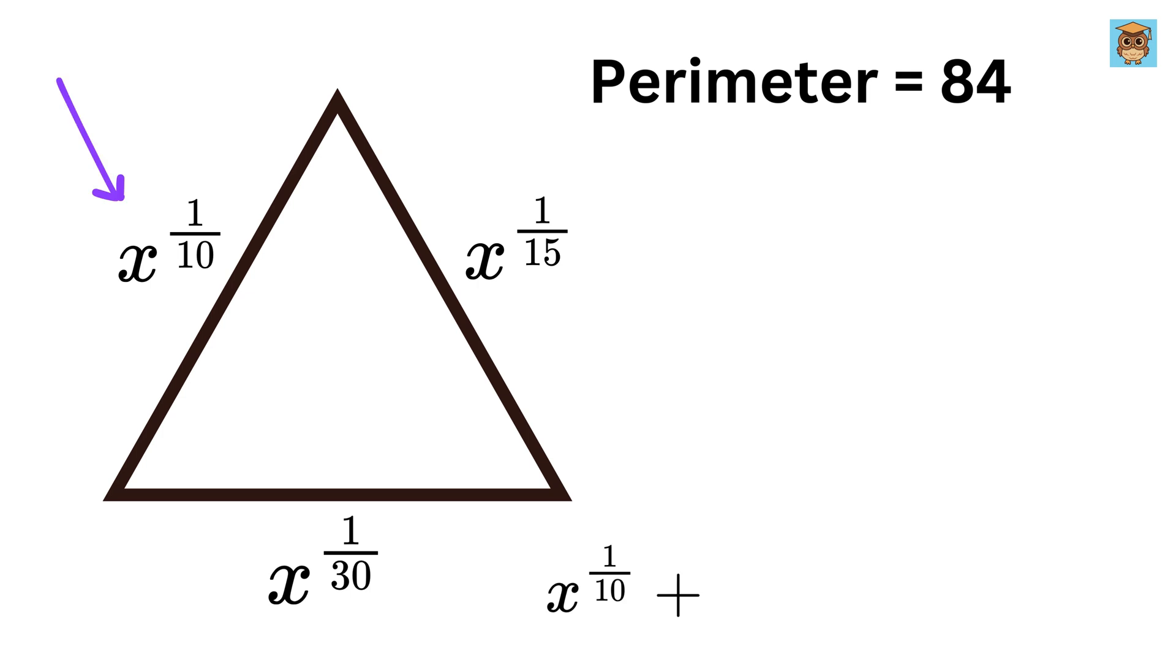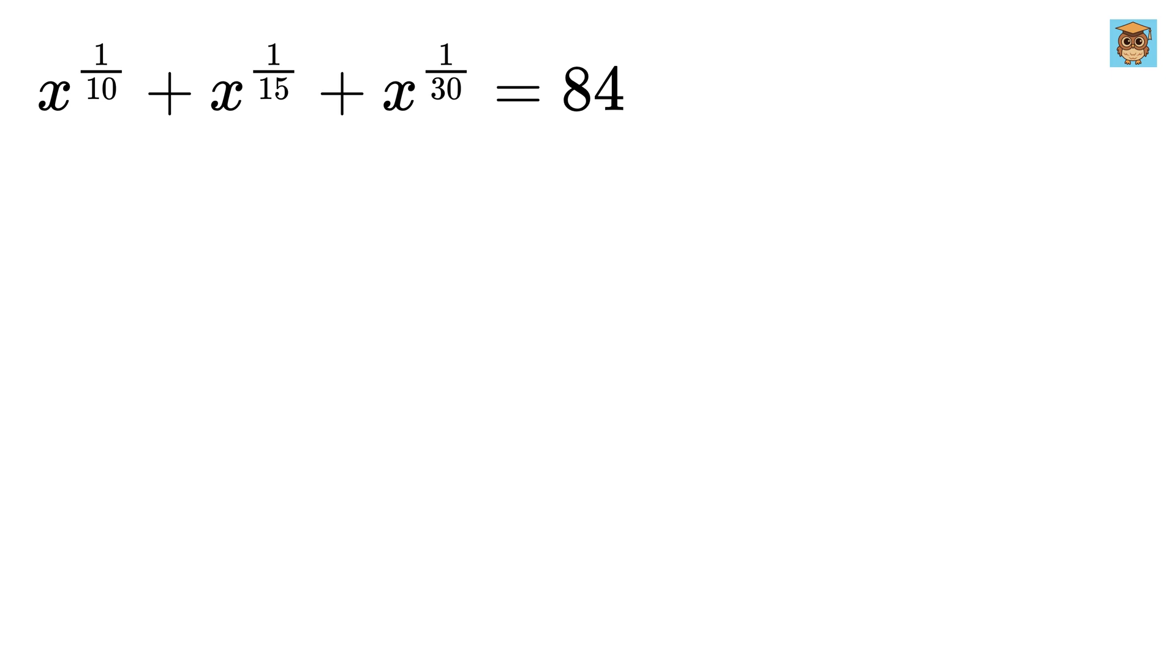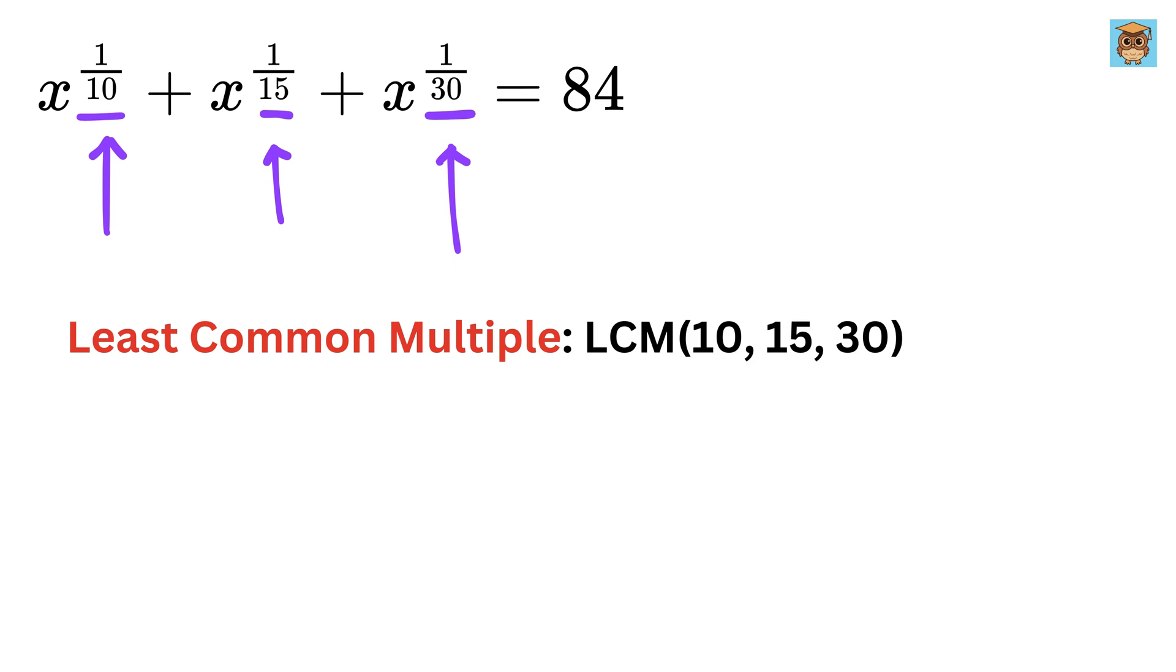So x raised to 1 over 10 plus x raised to 1 over 15 plus x raised to 1 over 30 is equal to 84. Now we need to simplify this equation. The best way to handle different exponents like 1 over 10, 1 over 15, and 1 over 30 is to find a common denominator. The least common multiple of 10, 15, and 30 is 30, so we will rewrite each exponent with a denominator of 30.